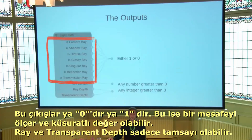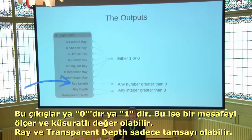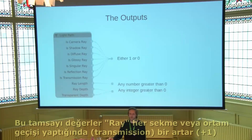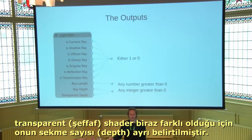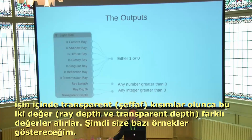The boolean outputs return either 1 or 0, while ray length is a distance that can have decimals. Ray depth and transparent depth can only be integers — whole numbers. Every time a ray bounces, including transmission rays, this number gets increased. Transparent shaders in Cycles are not physically correct, so they are their own type of shader, which is why they're captured with transparent depth as opposed to ray depth — there's a slight distinction between the two.